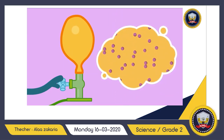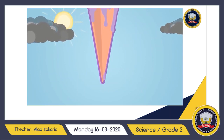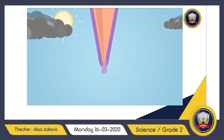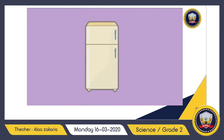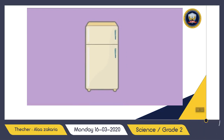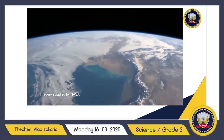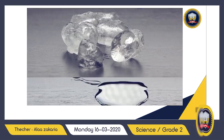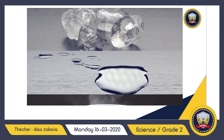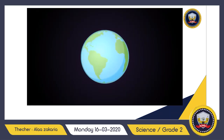Sometimes matter can change states, usually by changing its temperature. If you heat ice cream it will melt and turn to a liquid. If you make the ice cream cool again, it will turn back to a solid. Water is unique because it's the only thing on earth that naturally occurs in all three states — as a solid, as a liquid, and as a gas — and it can change states quite easily.